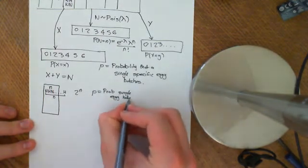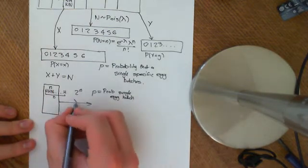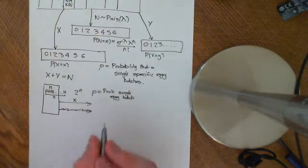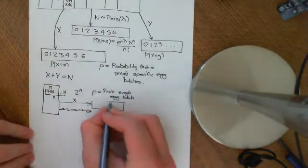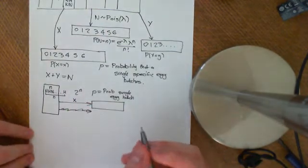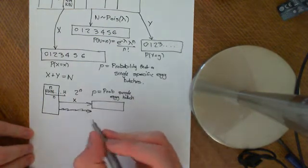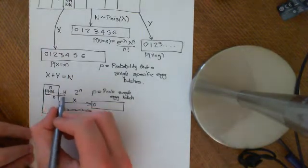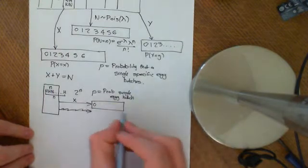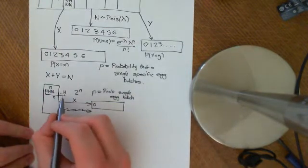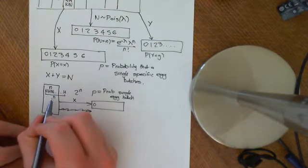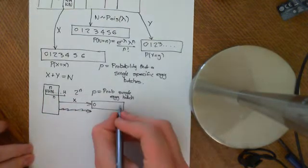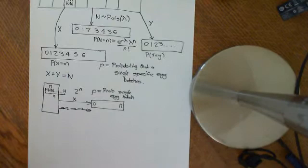Now we think about big X acting on this probability space. It ascribes to each outcome how many eggs actually hatched. The possibilities it can take on range from zero — the event that none of them hatch — all the way up to n, where all n eggs hatch. It can take on any value in between, up to little n.